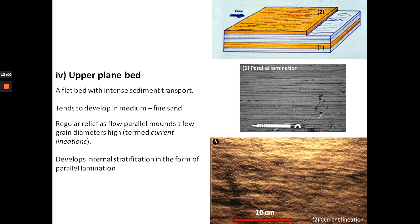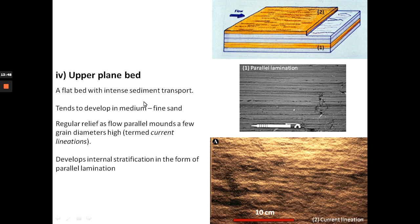At low flow velocities, given the right grain size, you get lower plane beds; increase the velocity and you get ripples, then dunes at higher velocities. Beyond dunes, at even higher velocities, you can also get what we call upper plane beds. Superficially, upper and lower plane beds look very similar — both have a flat surface with plane parallel lamination inside. Upper plane beds develop at higher velocities with more intense sediment transport, and tend to develop in finer sand — medium to fine grain — while lower plane beds develop in coarser, very coarse sand.